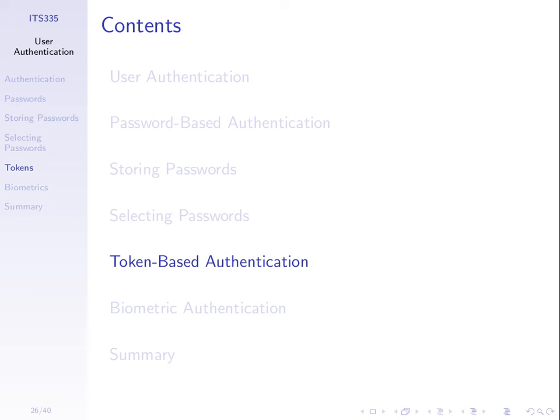A key way to authenticate users is using passwords, but there are other ways. Passwords represent what you know. There's also what you have. If you have a token with you, that can be used to authenticate you. The idea is that the person who has that token is allowed to access the system. There are different types of tokens.